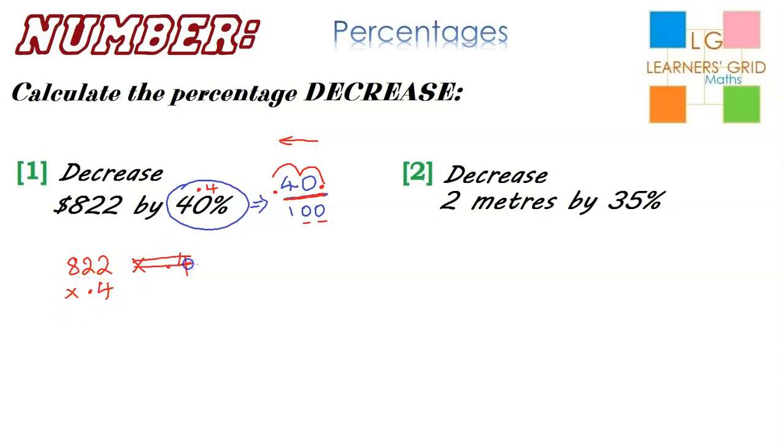So I'll ignore that for now. Okay, so 4 times 2 is 8, 4 times 2 is 8, and 4 times 8 is 32. The decimal point's not in my answer yet.